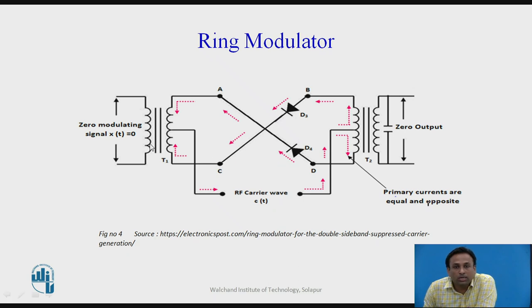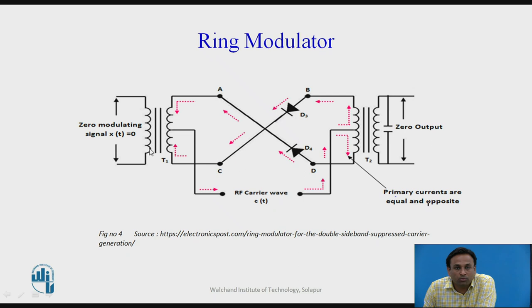For the negative half cycle, D1 and D2 become reverse biased and D3 and D4 are forward biased. The same principle applies: the currents are opposite in direction, the magnetic fluxes cancel each other, and the output is again zero. This confirms that the carrier is suppressed even without a modulating signal applied.